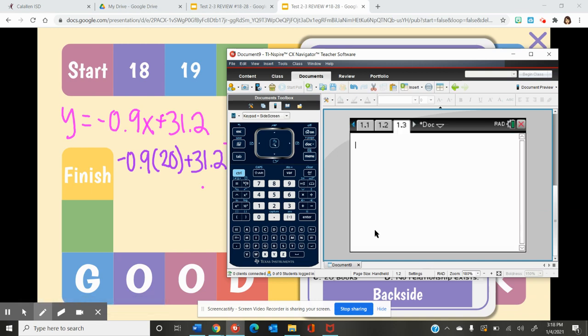Now I'm going to put negative 0.9, open up a parentheses, 20, close that parentheses, and add 31.2 to that. And here we get 13.2.